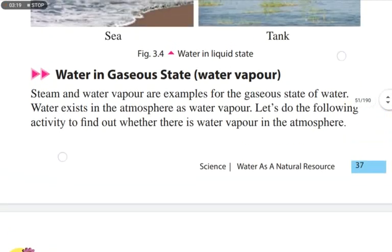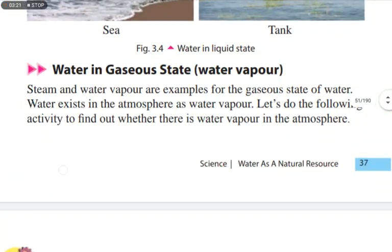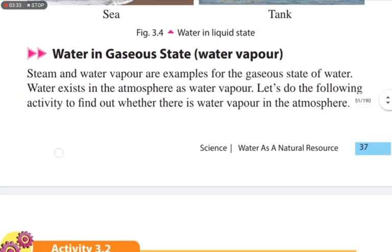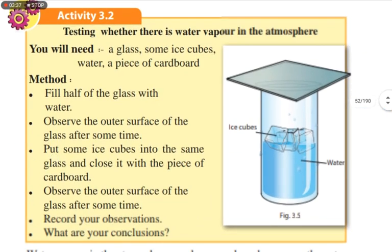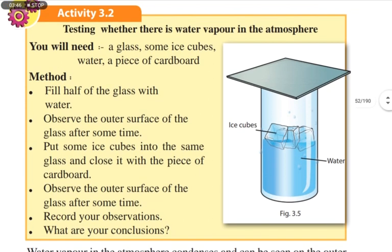Water in gaseous state: steam and water vapor are examples of the gaseous state of water. Water exists in the atmosphere as water vapor. We are going to discuss Activity 3.2 in your textbook, which is about testing whether there is water vapor in the atmosphere.